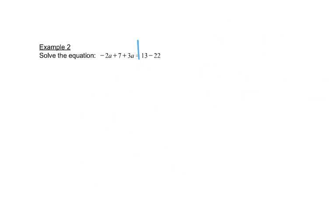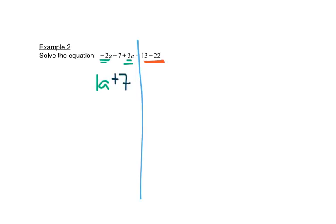Let's look at this equation. We'll draw our line straight down. The first thing we should see is that we have like terms on the left-hand side: negative 2a plus 3a is 1a, and there's still a plus 7. We also have like terms on the right-hand side: 13 minus 22 is negative 9.